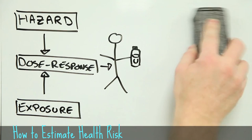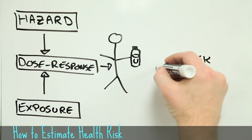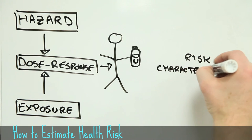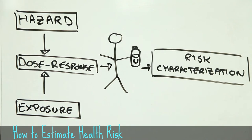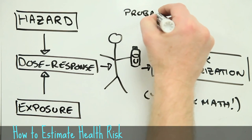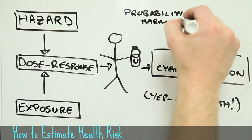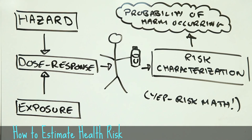This is the dose-response relationship, and this is what transforms hazard and exposure into a measure of risk. Of course, we still need to know what to do with this measure of risk, but that is a story for another day.